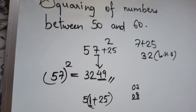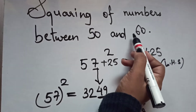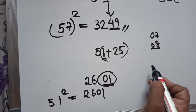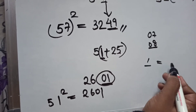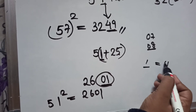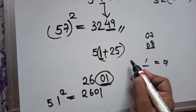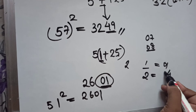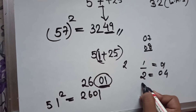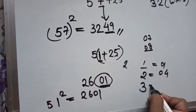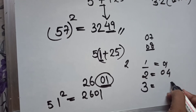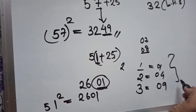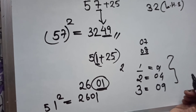Keep in mind: the number must lie between 50 and 60. If the unit digit square is a single digit, write it as two digits with a leading zero. For example, unit digit 2: 2² = 4, write 04. Unit digit 3: 3² = 9, write 09.